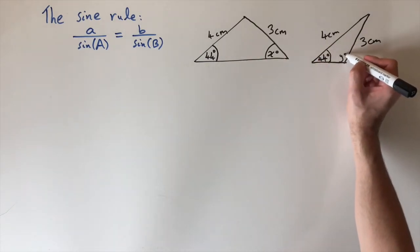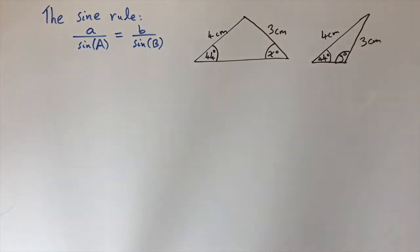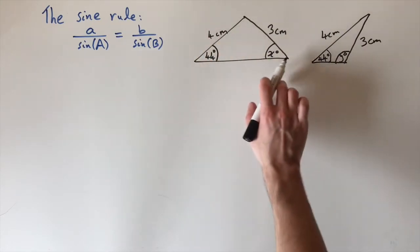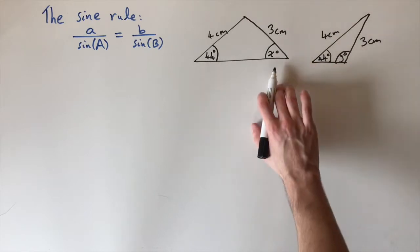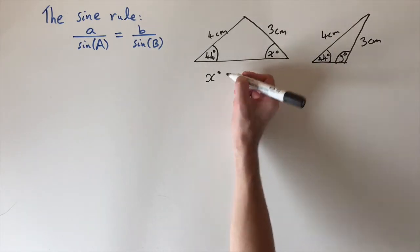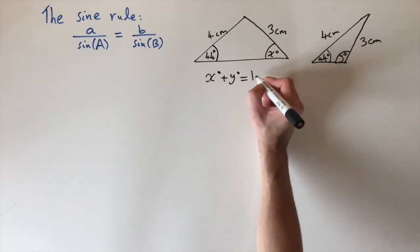the missing angle, let's call it y, is an obtuse angle, so it's bigger than 90 degrees. We could use the sine rule to solve this problem as usual to find x. This will give the acute angle. But to find the angle y, we need to use a relationship between x and y. I claim that x plus y equals 180 degrees.